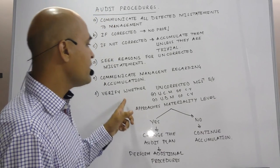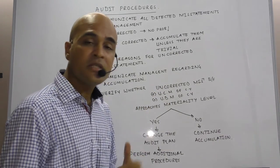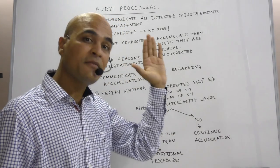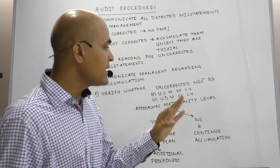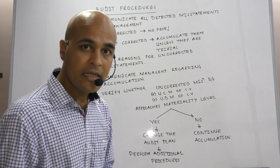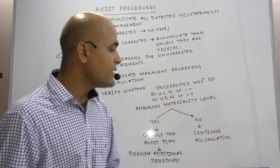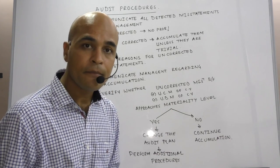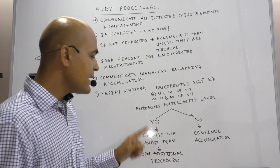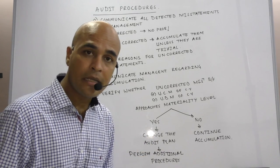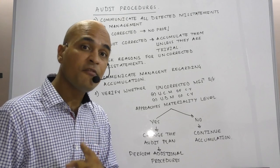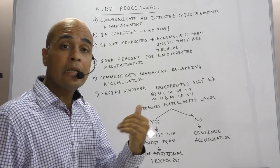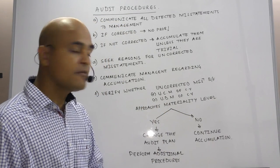The auditor should verify whether the uncorrected misstatements brought forward — that is, accumulated misstatements of the previous year — plus uncorrected misstatements of the current year, plus undetected misstatements of the current year, approaches the materiality level. If it approaches materiality level, change the audit plan, perform additional procedures, and verify whether it in fact approaches or exceeds the materiality level.